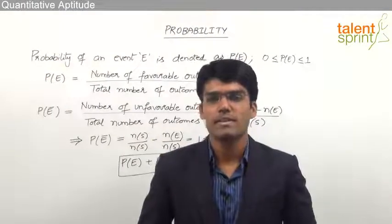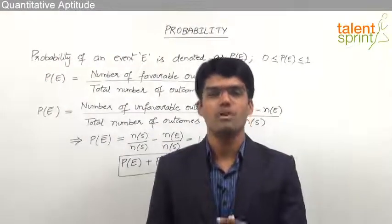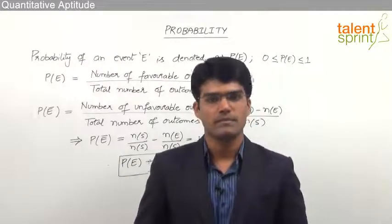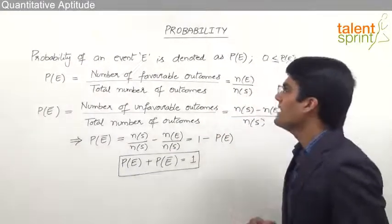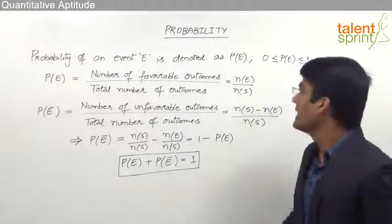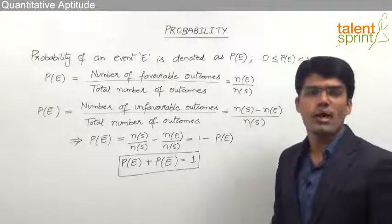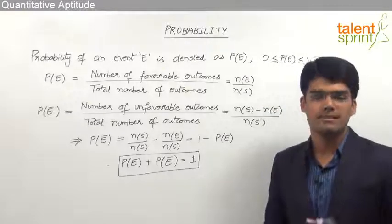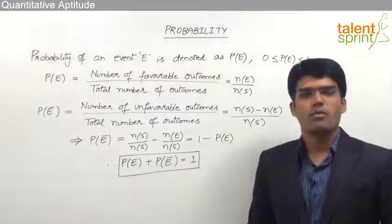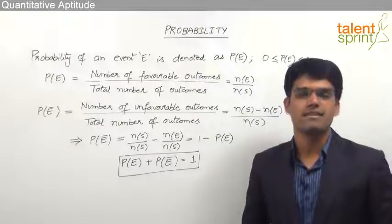After learning about random experiment and sample space, let us now understand how to measure the probability of occurrence of an event. The probability of an event E is denoted as P(E). In general, the probability of an event lies between 0 and 1 — that is, the minimum probability is 0 and the maximum probability is 1.